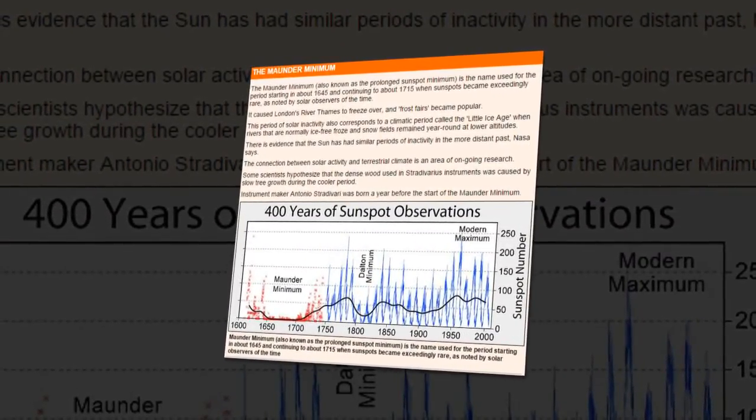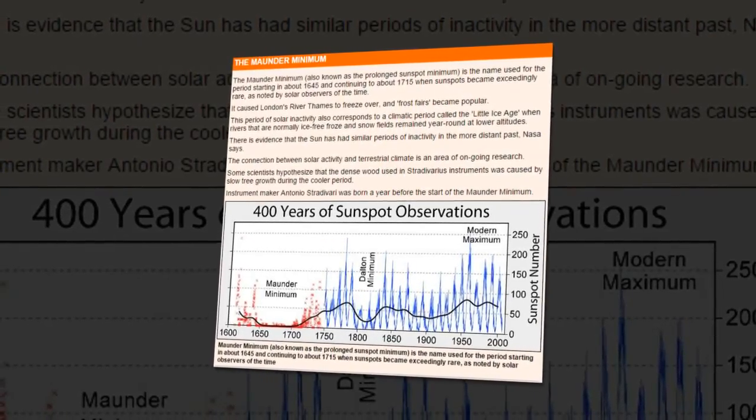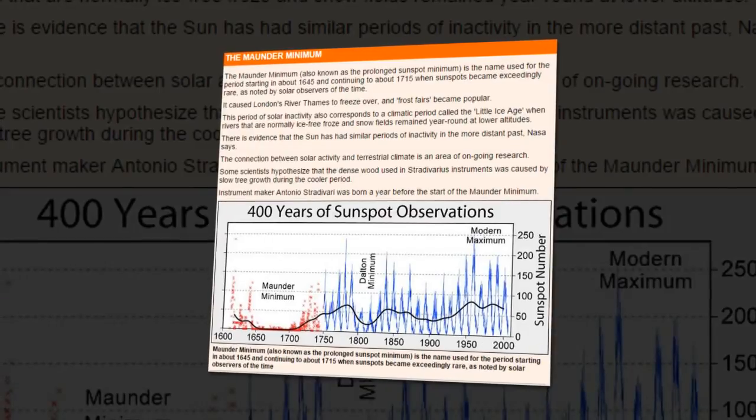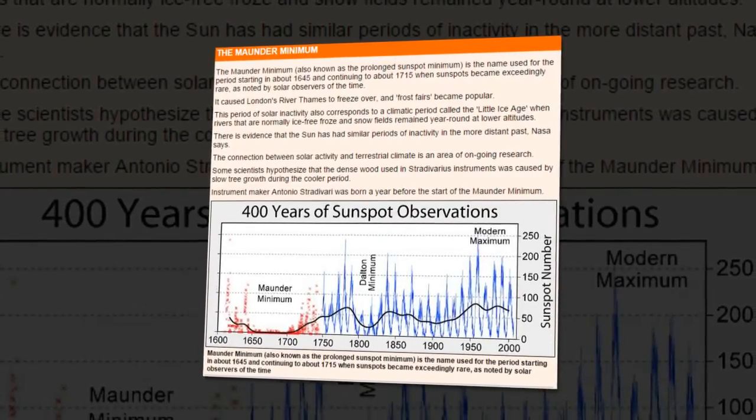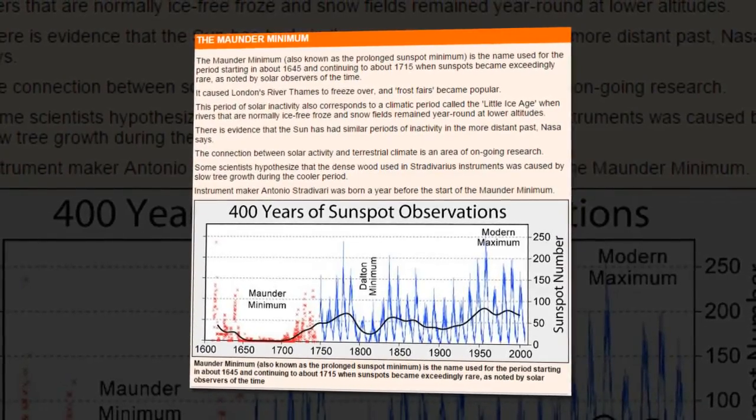We found magnetic wave components appearing in pairs, originating in two different layers in the Sun's interior, she said. They both have a frequency of approximately 11 years, although this frequency is slightly different, and they are offset in time.